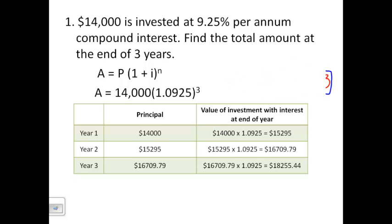You could have alternately used a table. A table takes a little bit more time, but it is very descriptive for those of you who like to see it out in writing. The final amount you should get is $18,255.44, no matter which way you do it.